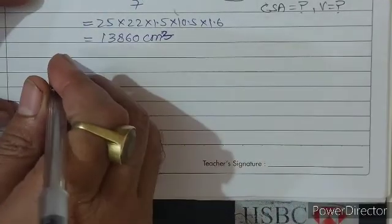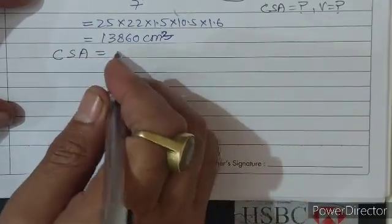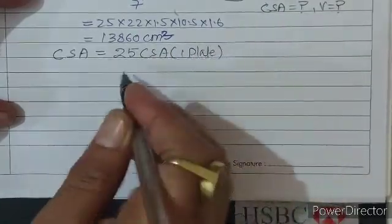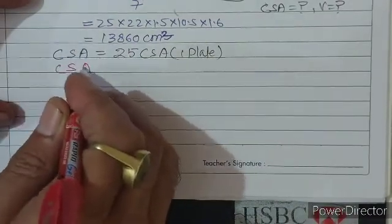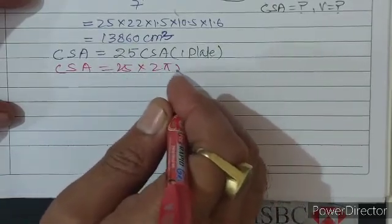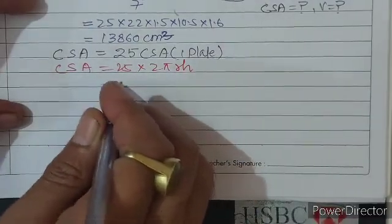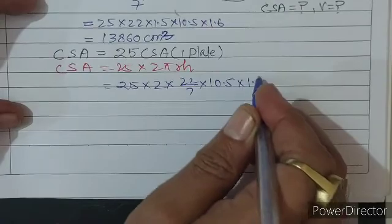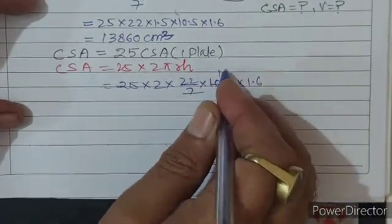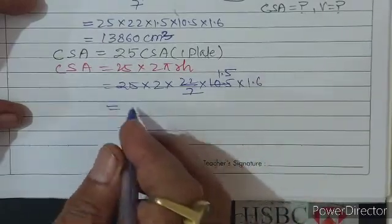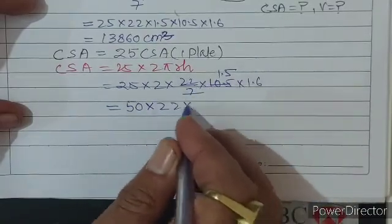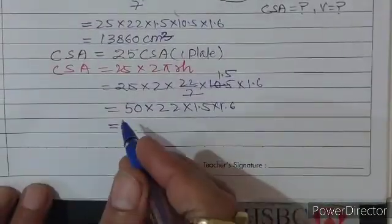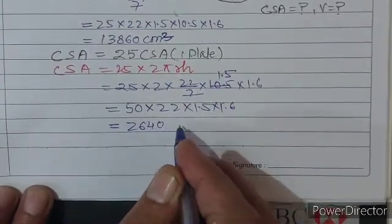CSA = 25 × CSA of one plate = 25 × 2πrh। Value रखेंगे: 25 × 2 × (22/7) × 10.5 × 1.6। 7 से cut होगा, 10.5/7 = 1.5। यह बनेगा 50 × 22 × 1.5 × 1.6। Solve करने पर CSA = 2640 cm²।